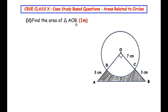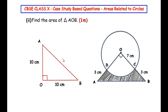The second sub question asks: find the area of triangle AOB. Looking at this triangle, it is a right angle triangle since angle O is 90 degrees. The length OB is made up of OC and BC: OC is 7 centimeters and BC is 3 centimeters, so OB = 7 + 3 = 10 centimeters. Similarly, OA is made up of OD and AD: OD is 7 centimeters and AD is 3 centimeters, so OA = 10 centimeters.